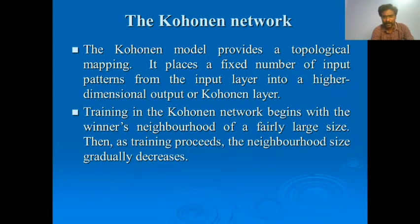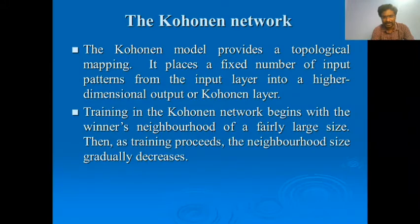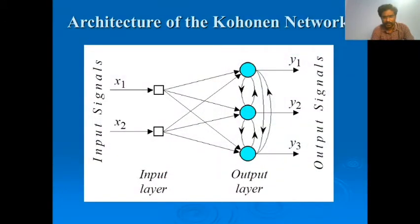Training in the Kohonen network begins with a winner's neighborhood of a fairly large size, following competitive learning. The neighborhood size gradually decreases as training proceeds. The architecture has two layers: an input layer and an output layer. Inputs X1 and X2 are passed to the Kohonen network, and the neuron that succeeds produces the output signal, which we judge against the desired output.